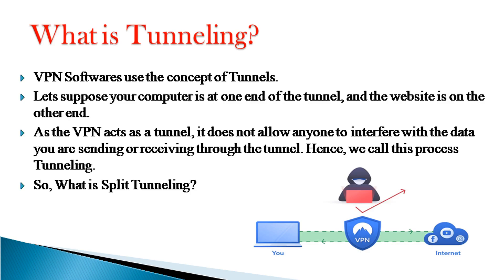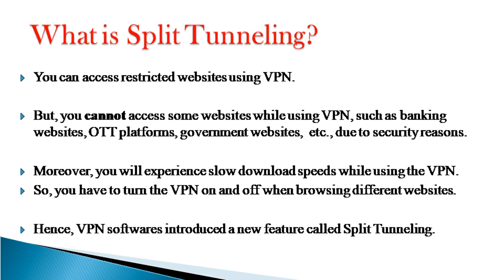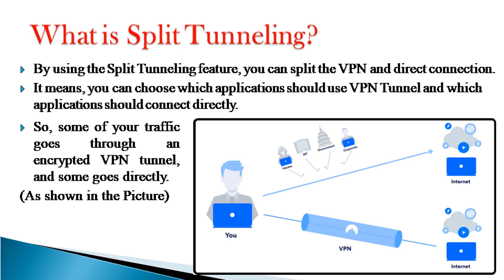So, what is split tunneling? You can access restricted websites using VPN, but you cannot access some websites while using VPN, such as banking websites, OTT platforms, government websites, etc., due to security reasons. Moreover, you will experience slow download speeds while using VPN, so you have to turn the VPN on and off when browsing different websites. Hence, VPN softwares introduced a new feature called split tunneling. By using split tunneling, you can split the VPN and direct connection, choosing which applications should use the VPN tunnel and which should connect directly, so some of your traffic goes through an encrypted VPN tunnel and some goes directly.